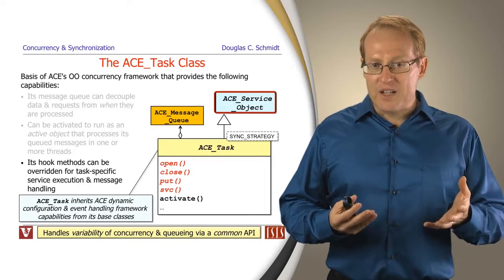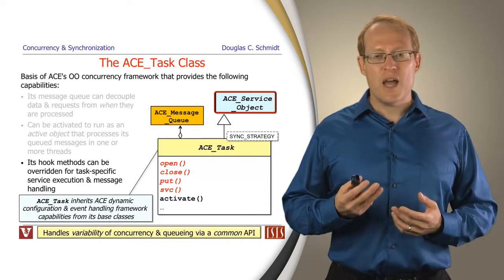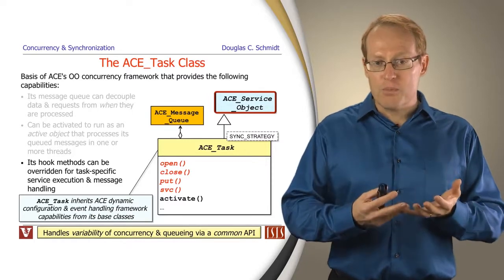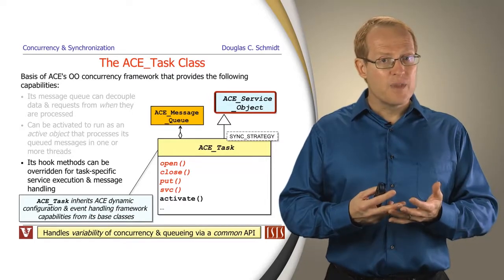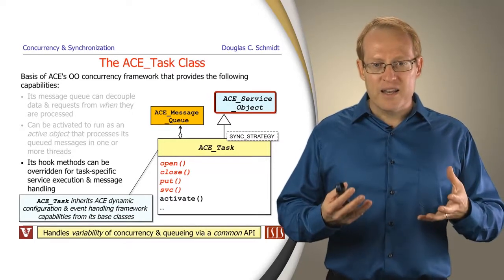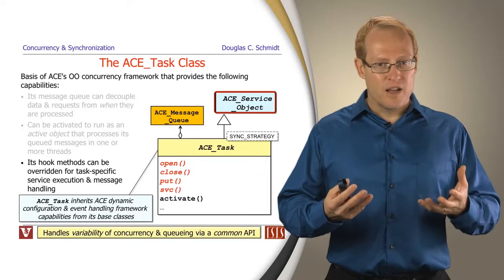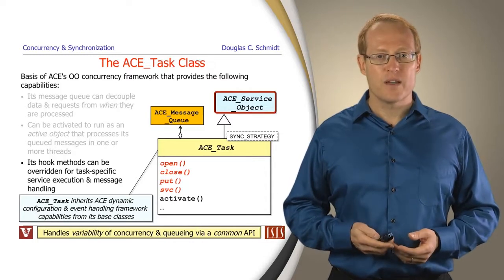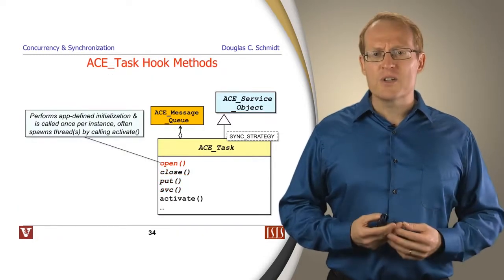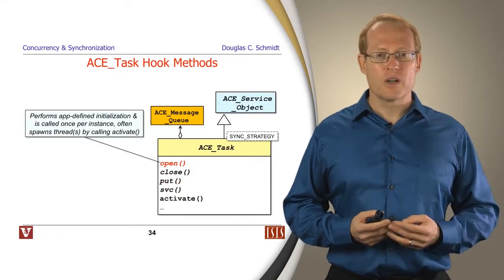From a commonality and variability point of view, an ACE task essentially hides the variability of concurrent processing and queuing by a common API with a certain set of templates and a certain set of hook methods that you override and customize in various ways. Let's talk about each of these hook methods. There are four of them that are important to understand.